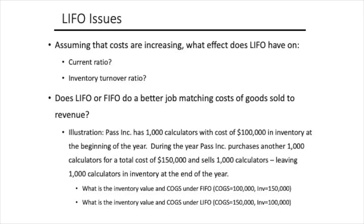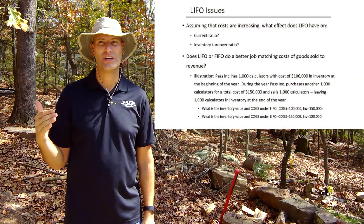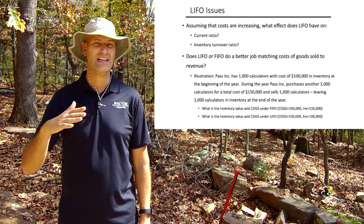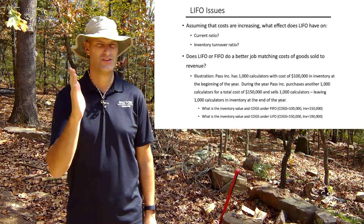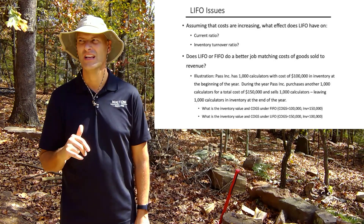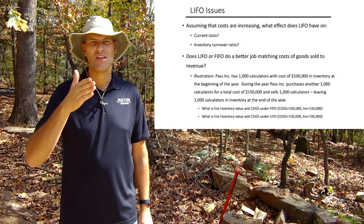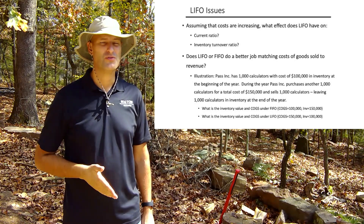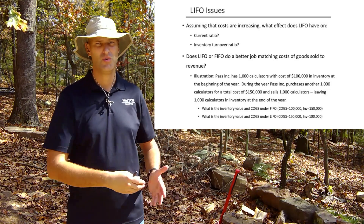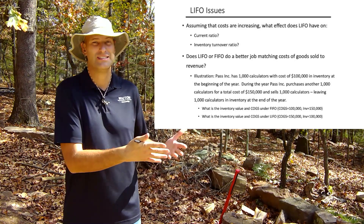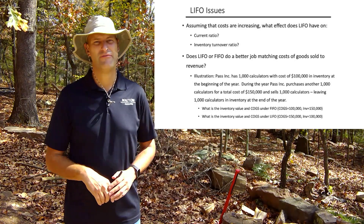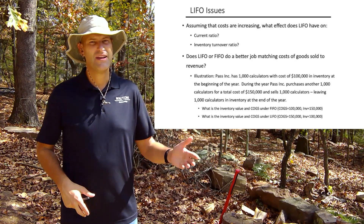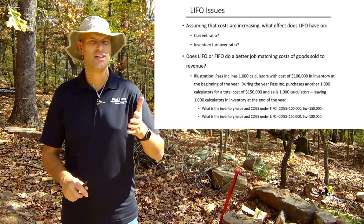Assuming costs are increasing, what effect does LIFO have on our current ratio or inventory turnover ratio? Under LIFO, the actual inventory is generally stated at a very old, lower cost. That means current assets are lower, which reduces the current ratio, and inventory itself is lower, which affects inventory turnover. Also, does LIFO or FIFO do a better job of matching costs of goods sold to revenue?